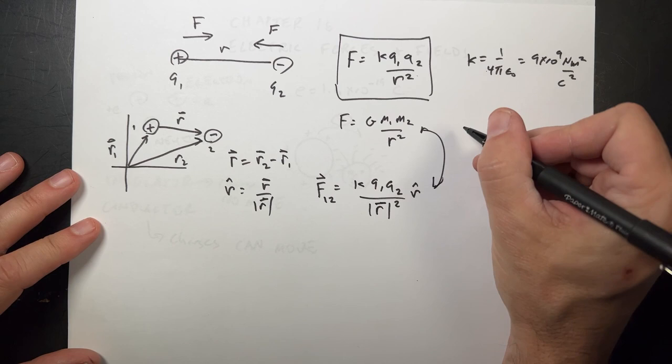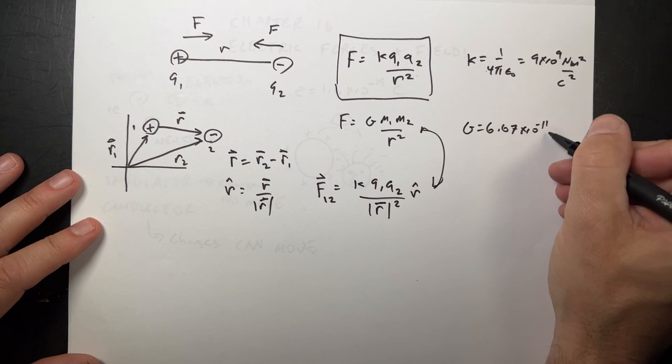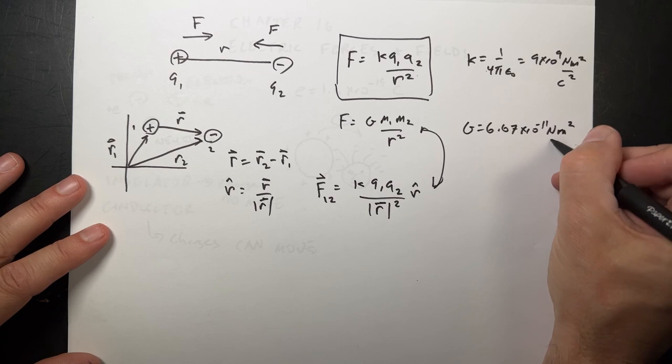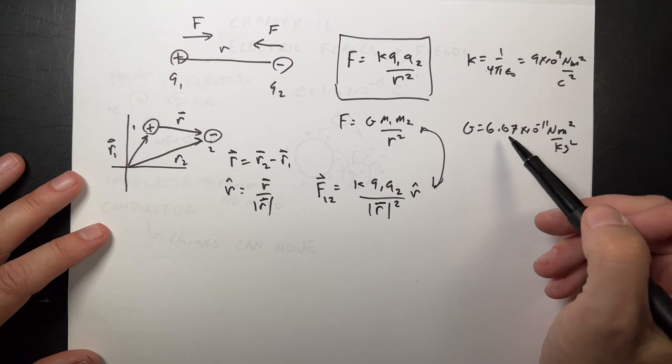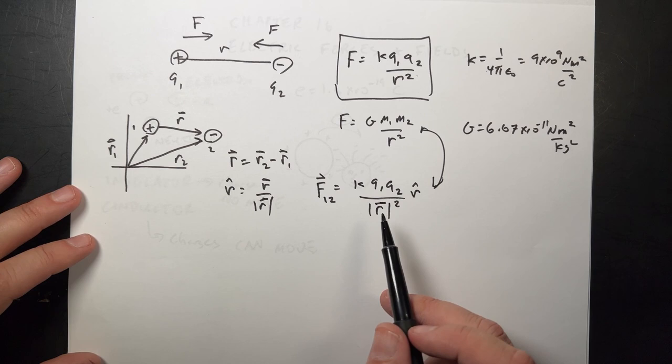That's the big difference between these two. G, the gravitational constant, is super small: 6.67 times 10 to the negative 11th newtons meters squared per kilogram squared. 10 to the negative 11th, 10 to the ninth. Of course, they're different units, but still the magnitude is huge. This is very, very weak, but always attractive. This is very, very strong, but could be attractive or repulsive.